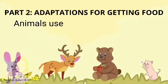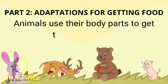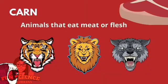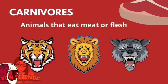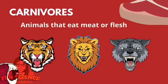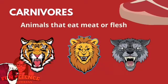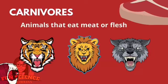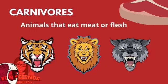Animals use their body parts to get their own food. Animals that eat meat or flesh are called carnivores. Dogs, tigers, lions, and wolves have sharp teeth that can tear the flesh of their prey.